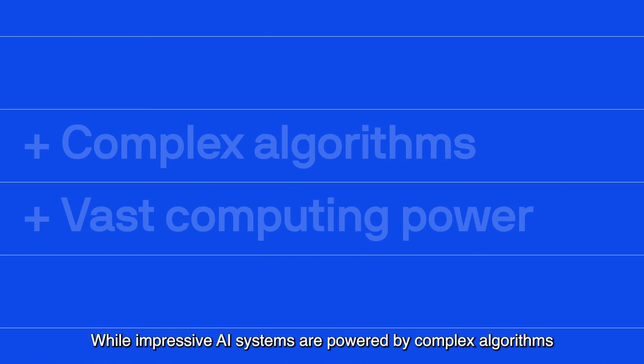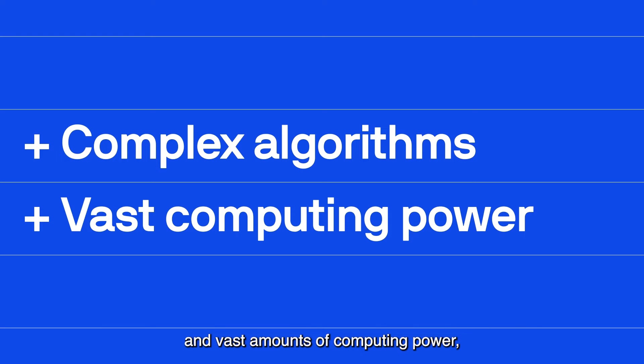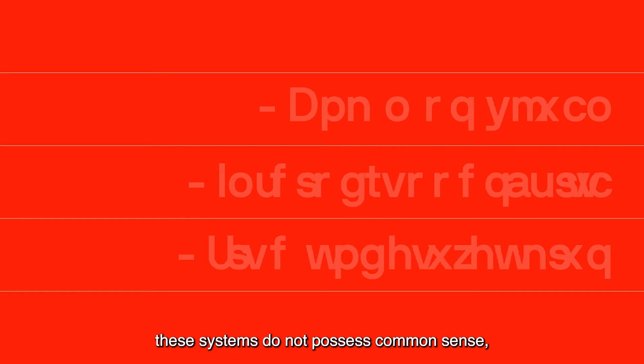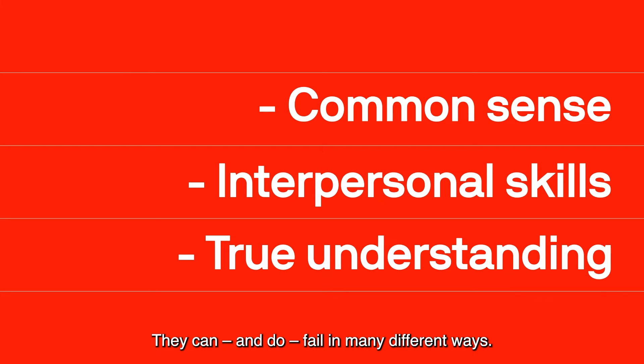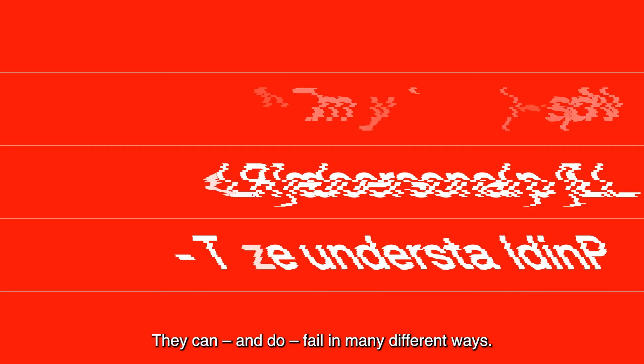While impressive, AI systems are powered by complex algorithms and vast amounts of computing power. These systems do not possess common sense, interpersonal skills, or a true understanding of the world. They can, and do, fail in many different ways.